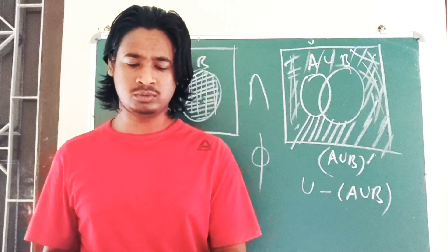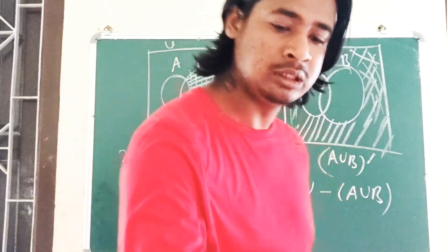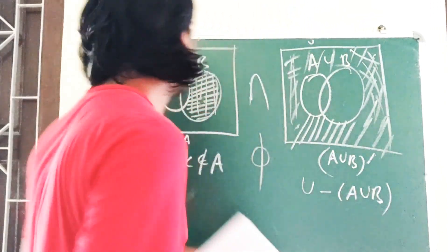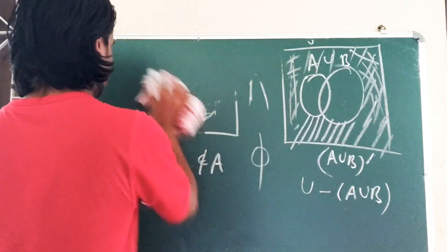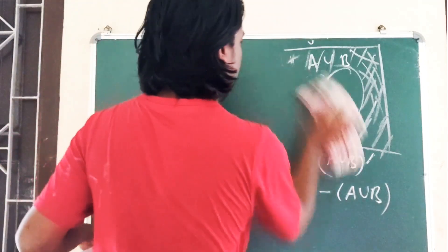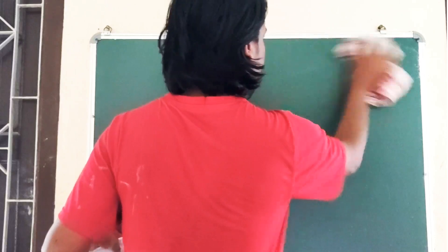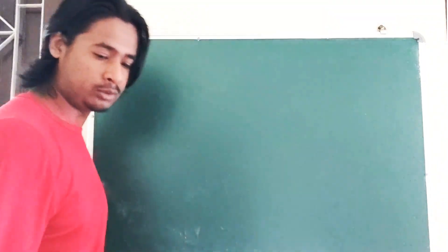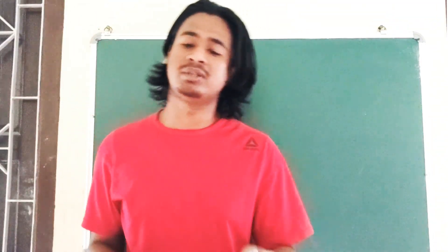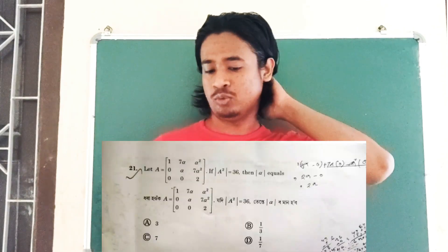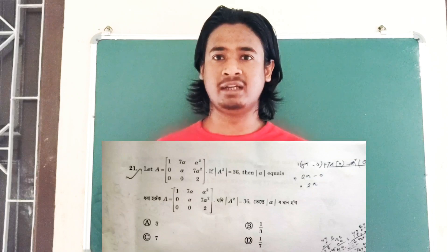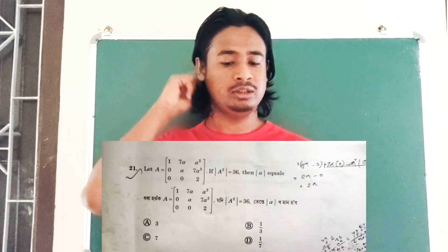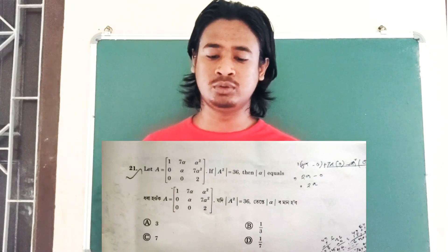Question 21 is one of the most beautiful questions. Matrix A is given as: first row (1, 7α, α²), second row (0, α, 7α²), third row (0, 0, 2). The determinant of A² is 36 and we need to find α, where α equals 1 is one of the answer choices.